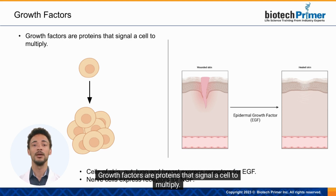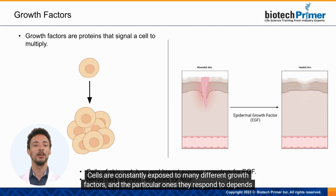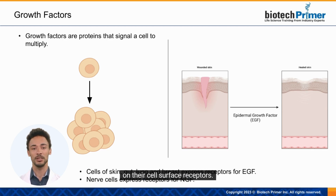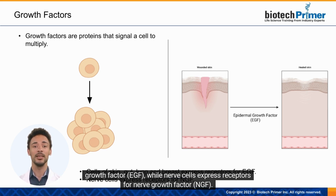Growth factors are proteins that signal a cell to multiply. For instance, epidermal growth factor stimulates the proliferation of skin cells during wound repair. Cells are constantly exposed to many different growth factors, and the particular ones they respond to depends on their cell surface receptors. Skin cells, as well as cells covering the gut, lung, and breast, express receptors for epidermal growth factor, while nerve cells express receptors for nerve growth factor.